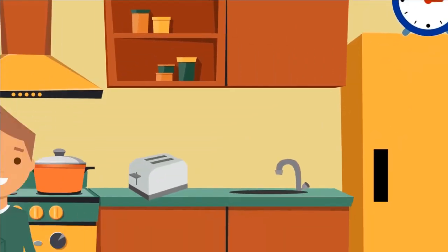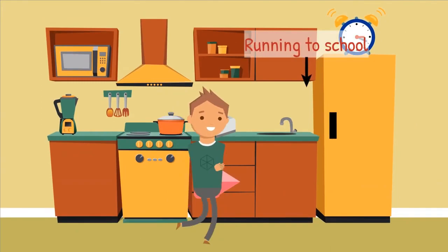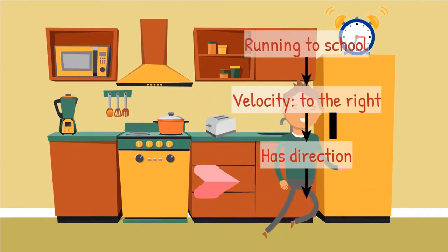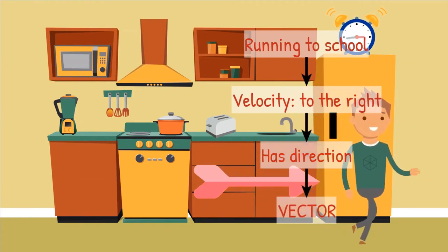The clock rings. It is school time. Mike is running to the right towards the front door. The velocity of Mike has a direction, therefore the velocity is a vector quantity.